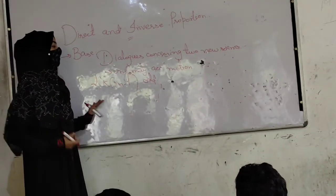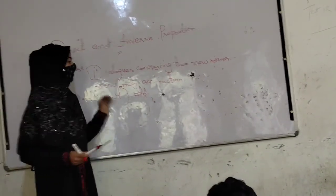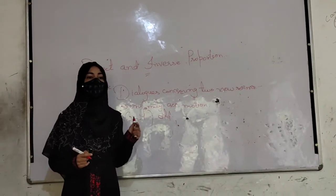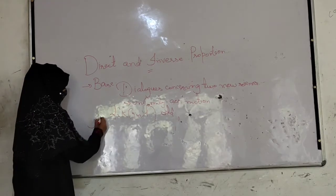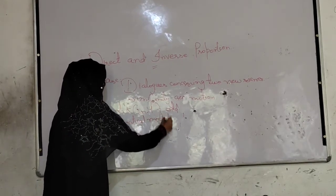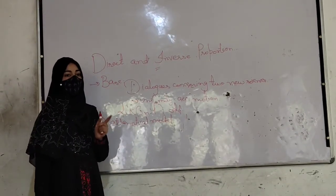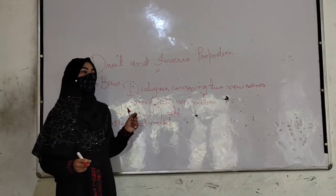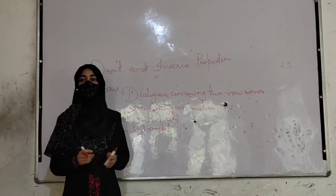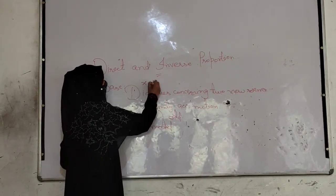A mathematical model is an equation that represents the real world quantities. Before I make you understand how this mathematical model is related to direct and inverse proportion, let me give you the example of a variable in an algebraic expression. A variable is that quantity whose numerical value changes — whose value is not constant. In our day-to-day life it could be our hair growth, our height, or our gain.